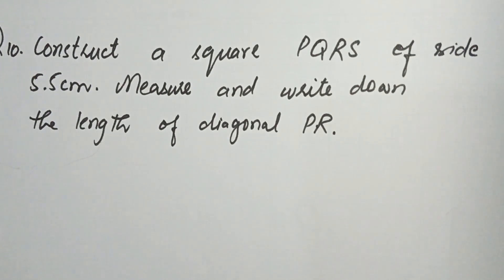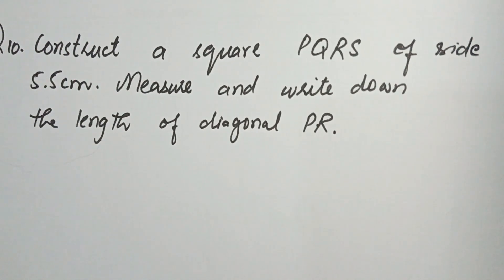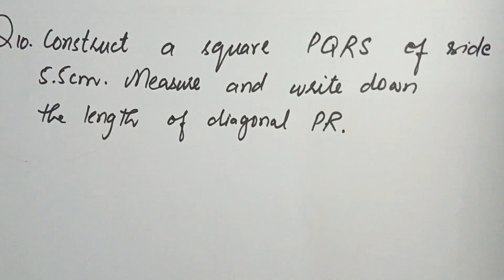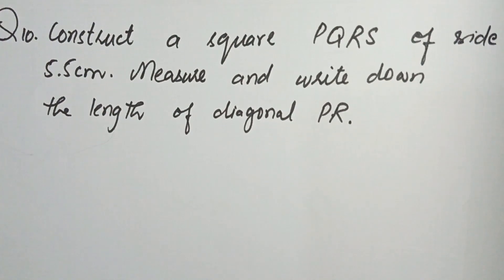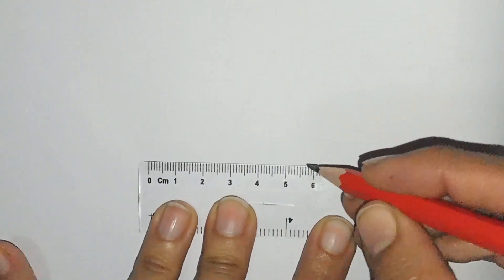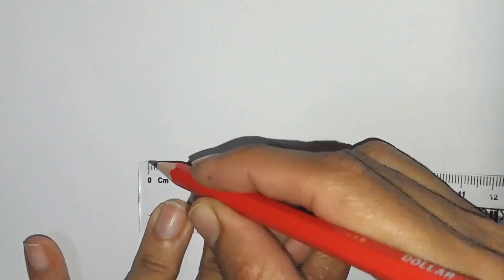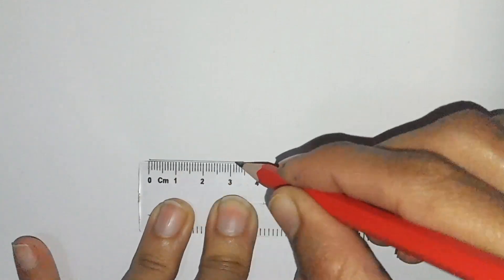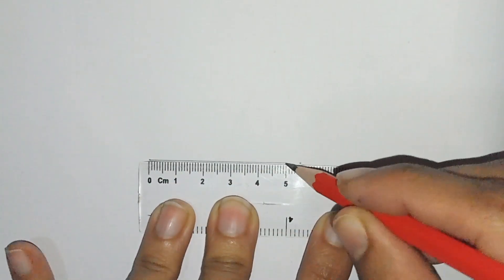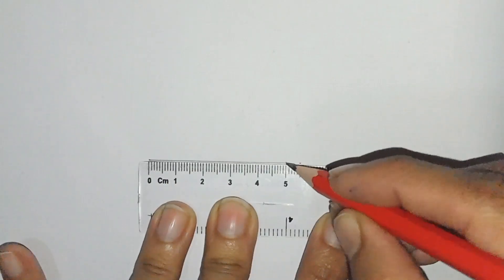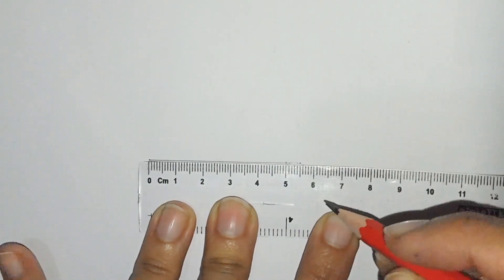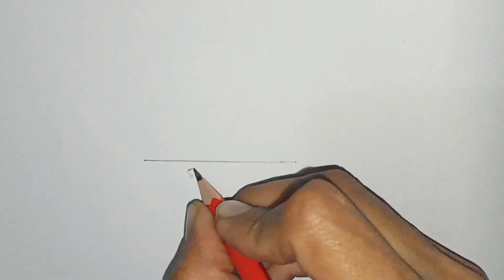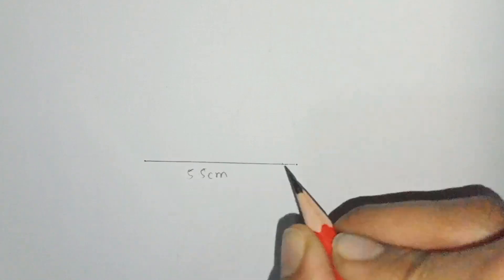We have to construct the square whose sides are 5.5 centimeters. First, we have to draw a line of 5.5 centimeters using the ruler. I am drawing the line — this is 5.5 centimeters.